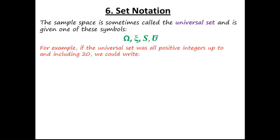For example, if the universal set was all positive integers - remember integer just means whole number - up to and including 20, we could write something like this. I'll pick one of these symbols, xi. So the universal set, all positive integers up to 20, is just basically all the whole numbers from 1 to 20.